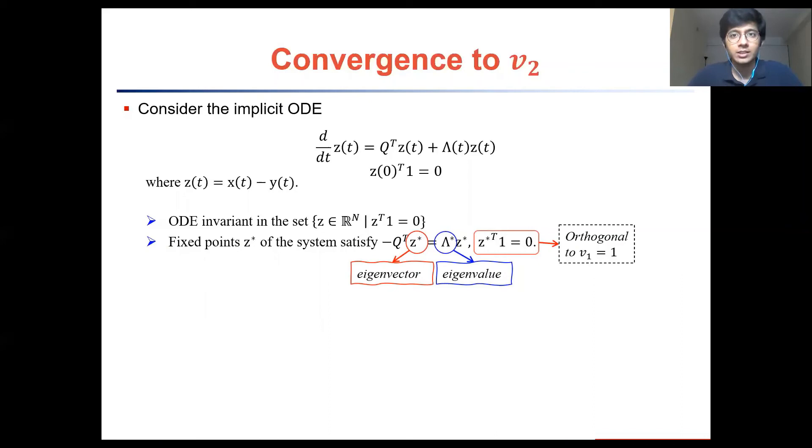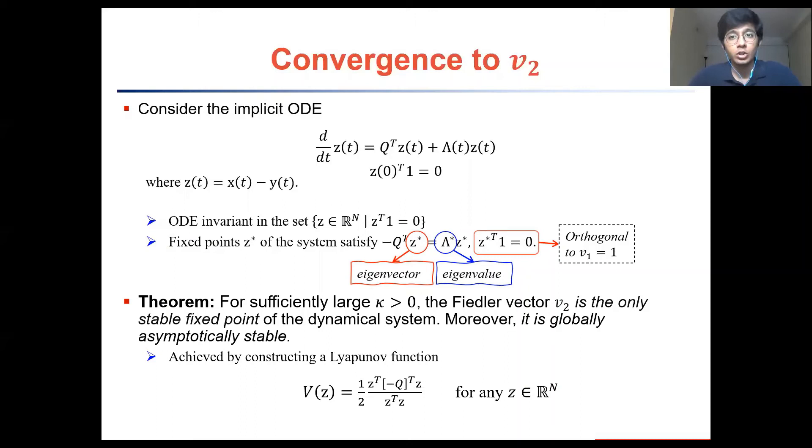This means that any fixed point of this particular system is either 0 or it is an eigenvector of minus q, which is the combinatorial graph Laplacian. By constructing a particular Lyapunov function we then go on to prove that for sufficiently large kappa, the Fiedler vector v2 is the only stable fixed point of this ODE system. It is also globally attractive.